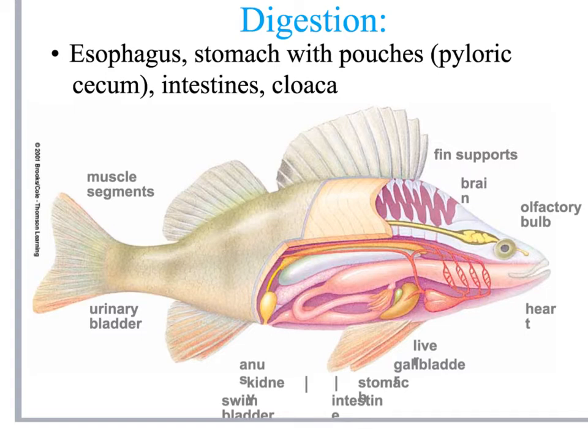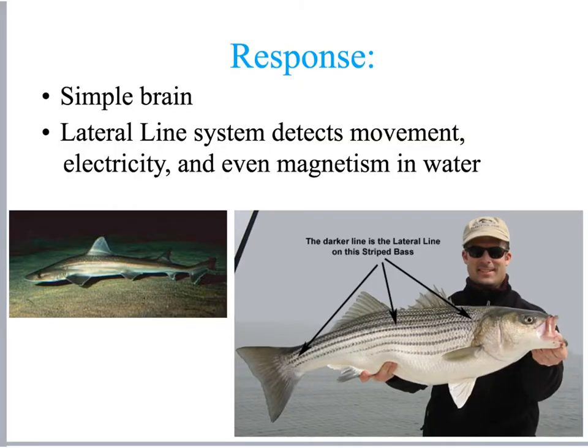The swim bladder helps with buoyancy — it helps the fish rise and fall in the water and maintain its position, making it look like it's floating. The fish can also respond to its environment: they have a brain, though not as cognitively strong as ours. They can communicate in the water, detecting electricity and even magnetic movements using the lateral line — those darkened lines on the side of the fish.